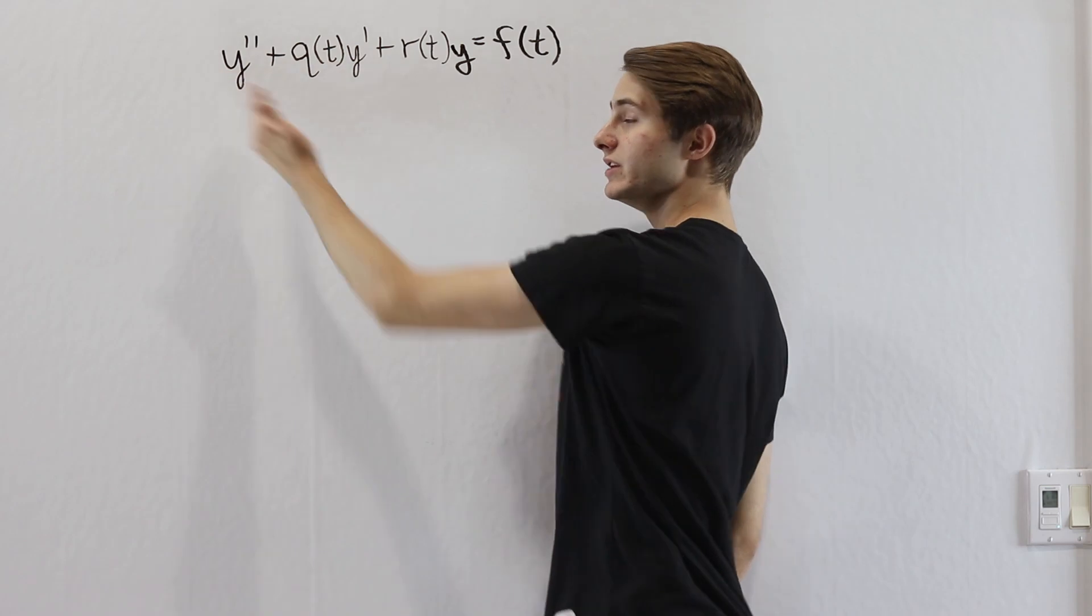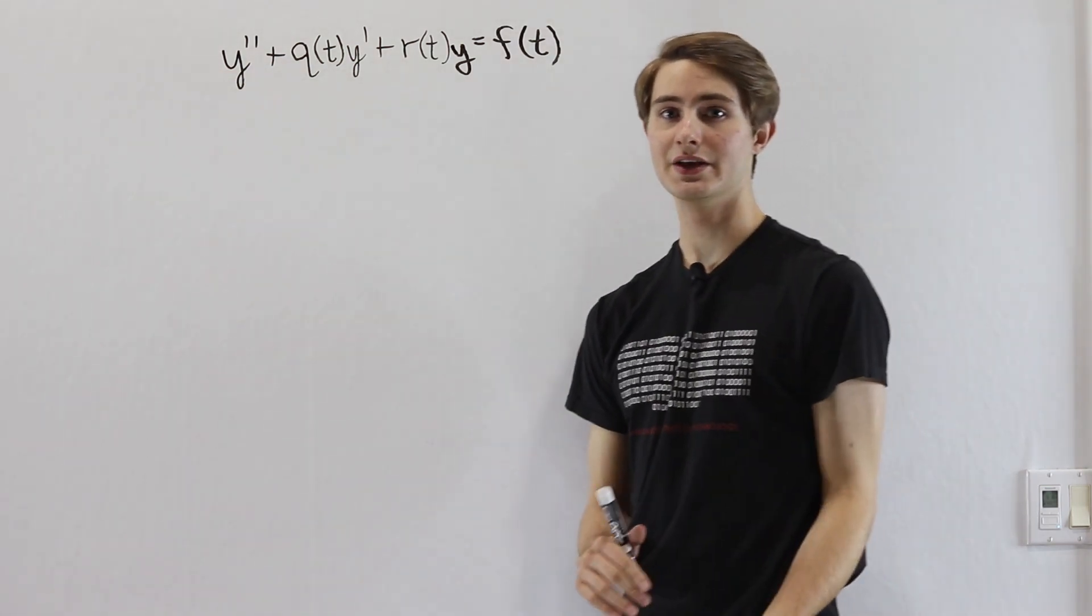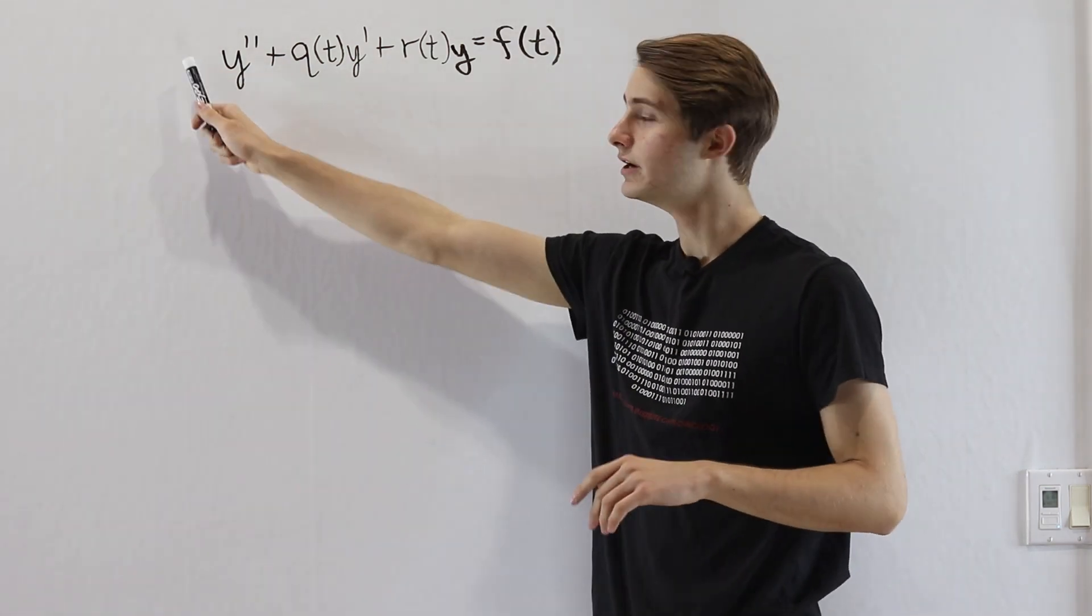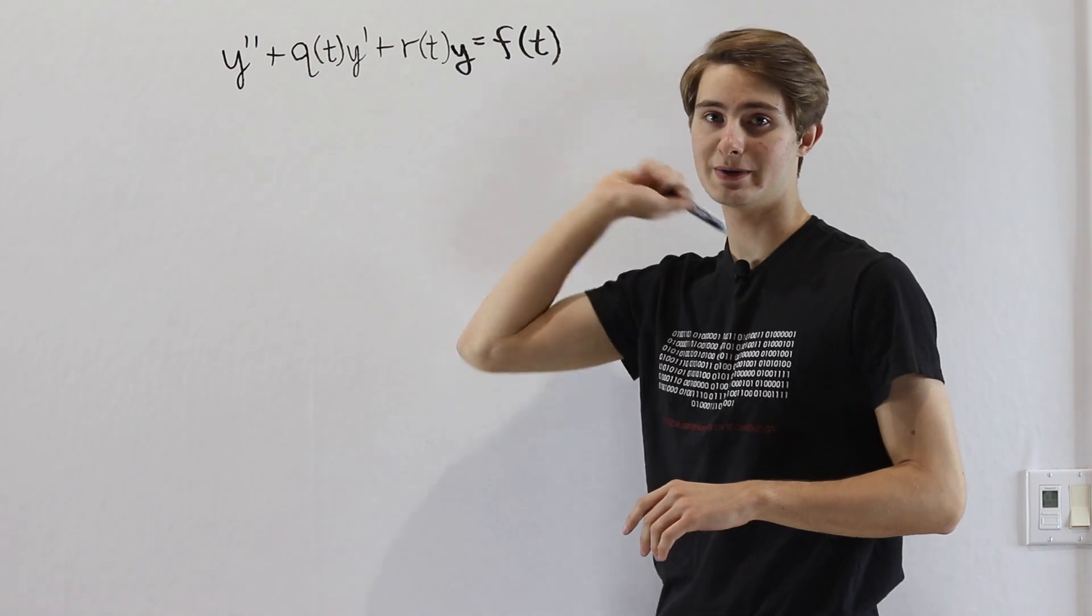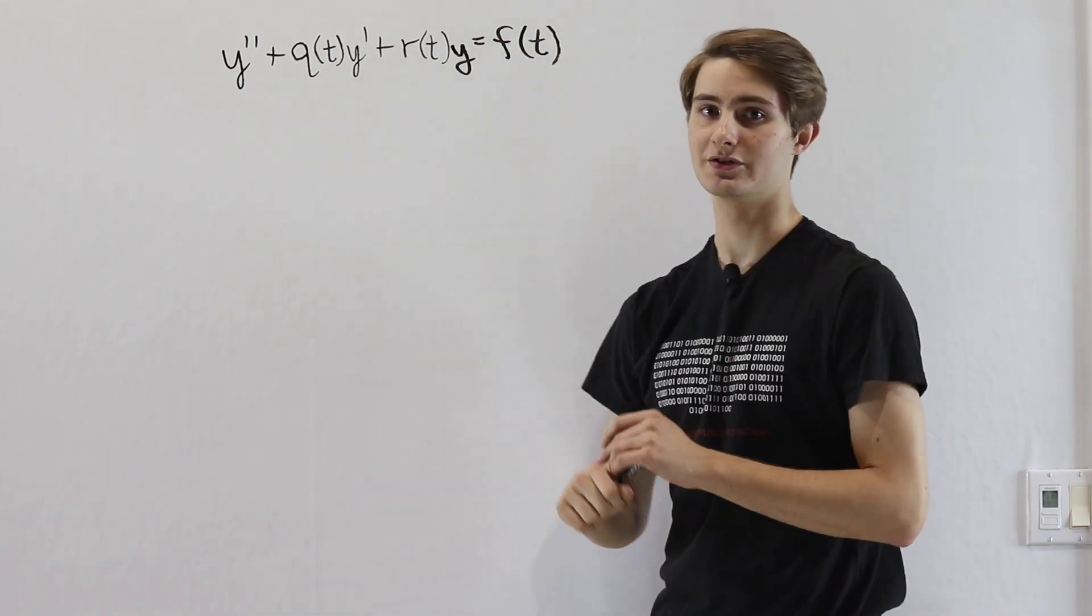This equation doesn't have a coefficient in front of the y double prime, and that's because if there is a coefficient here, we can just divide the whole equation by that function to get rid of it from the start.